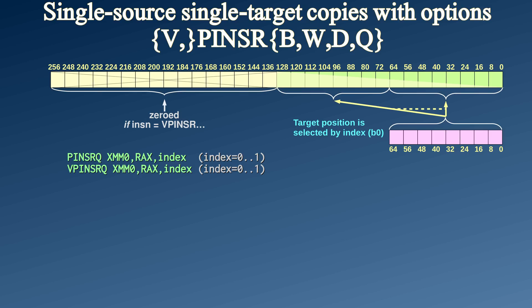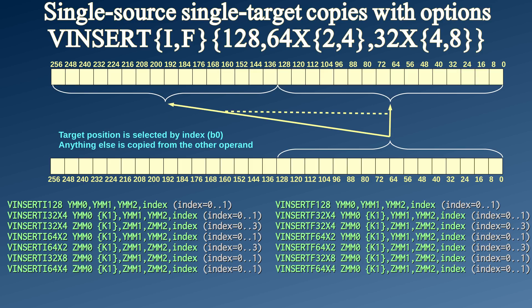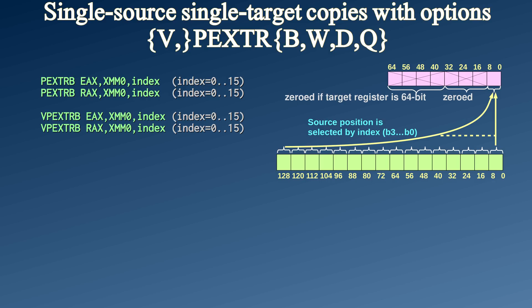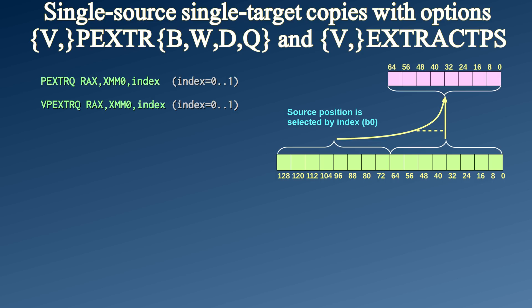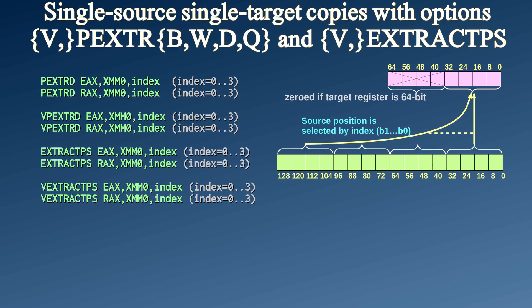All four of these require the source to be a general purpose register. If the source and target are vector registers, the word insert must be spelled in full, and the name of the instruction must contain a hint for the type of the data to be moved. Now the opposite of insertion is extraction. The PEXTRB instruction pulls a particular byte out from a vector register and stores it in a general purpose register. The same goes for 16-bit units and 64-bit units. For 32 bits, there are two different instructions that do exactly the same thing: PEXTRD and EXTRACTPS — there is absolutely no difference between these two, except a possible hint to the instruction decoder.